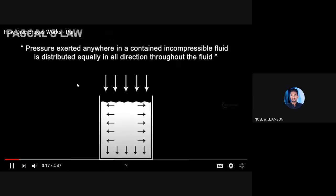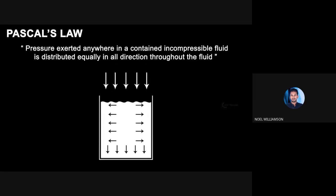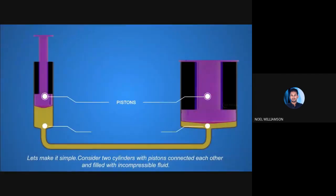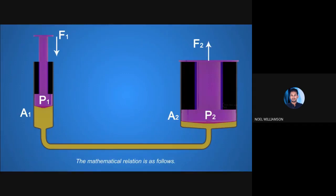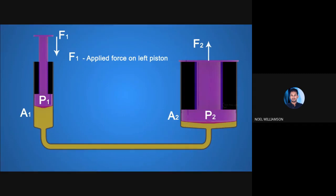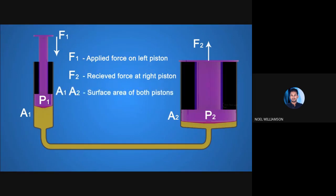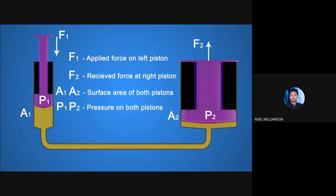The brake system works based on Pascal's law. The law states that pressure exerted anywhere in a contained incompressible fluid is distributed equally in all directions throughout the fluid. Consider two cylinders with pistons connected to each other and filled with incompressible fluid. F1 is the applied force on the left piston, F2 is the received force at the right piston, A1 and A2 are the surface areas of both pistons, and P1 and P2 are the pressures experienced by both pistons.